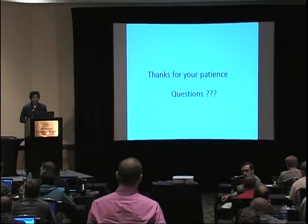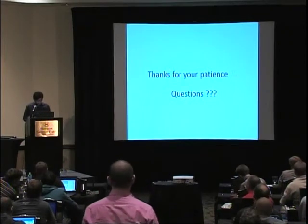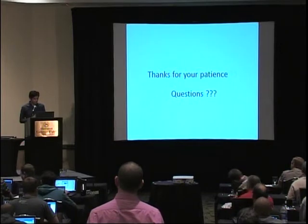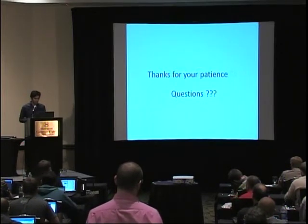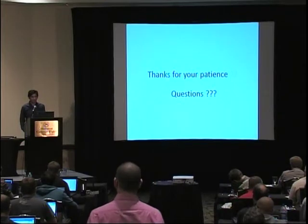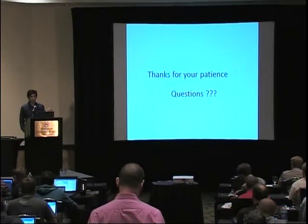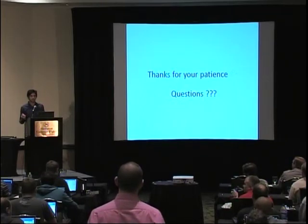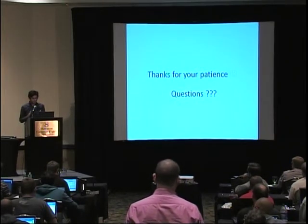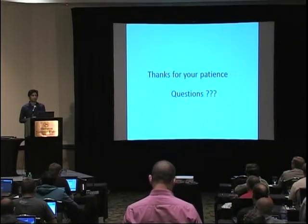Audience member: Could you explain more about how you measure the frequency offset at the transmitter? Mohamed: When a packet is received, we have the GMSK waveform after down conversion in the baseband. We apply blind estimation for GMSK packets: we square the incoming signal, take the FFT, and find the maximum peak. The squared signal gives twice the offset, so we divide by two to obtain the frequency offset.